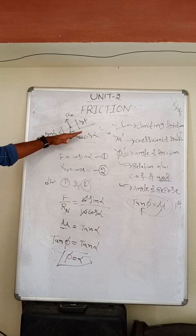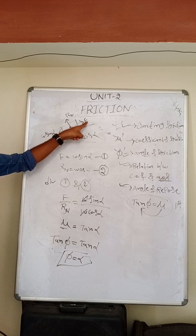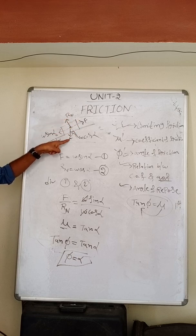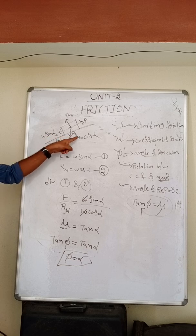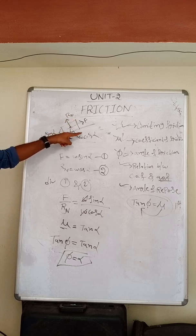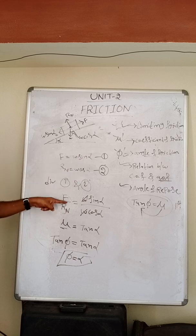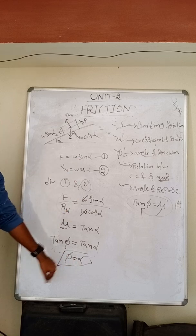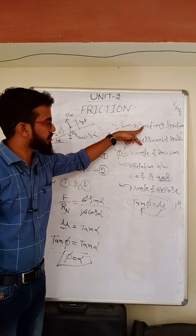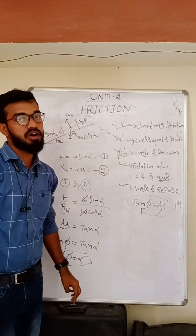To summarize: for a body resting on an inclined plane moving downward, friction acts upward, and normal reaction acts perpendicular to the contact surface. Resolving forces gives Rn = W cos α and F = W sin α. Dividing these gives μ = tan α, and since tan φ = μ, we get φ = α. Topics covered: limiting friction, coefficient of friction, angle of friction, relation between coefficient of friction and angle of friction, and angle of repose.